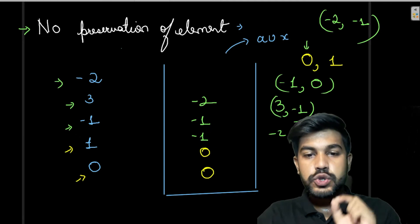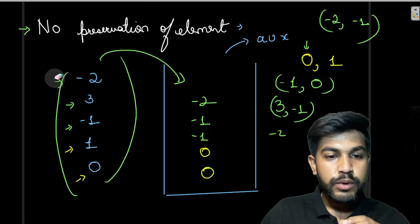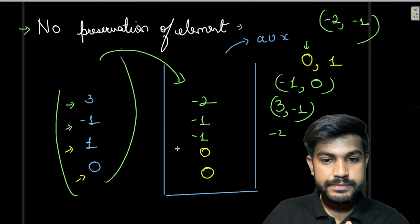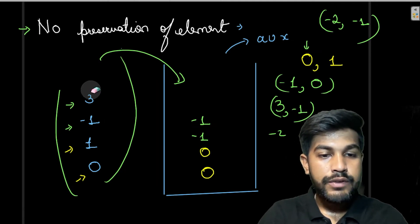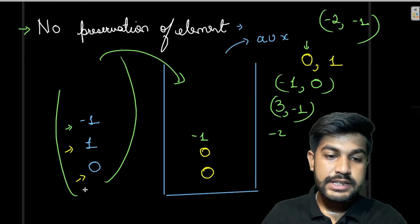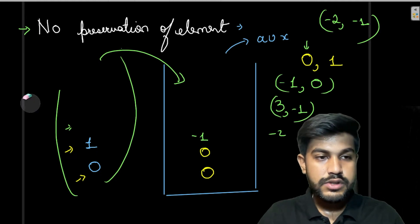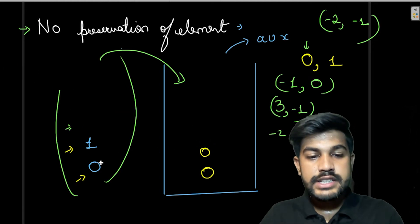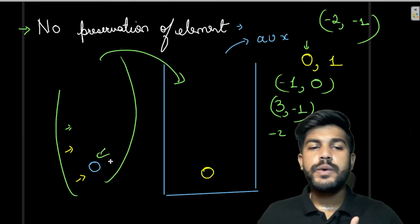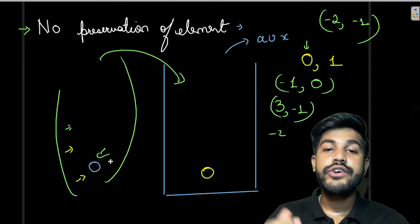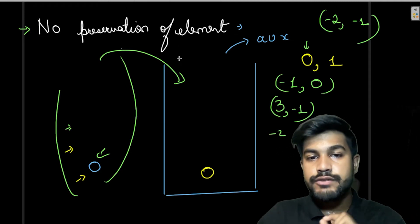So the auxiliary stack now holds: -2, -1, -1, 0, 0 — representing the minimum at each step. For the full array, the minimum is -2. After removing -2, the minimum is -1. After removing 3 and -1, the minimum is still -1. After removing those, the minimum is 0, and finally 0 is the only element left.